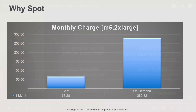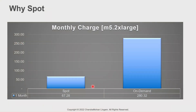Here's a pricing comparison. An M5 2xlarge spot instance would cost $67 for one month's usage, whereas the same instance on on-demand purchasing would cost $280. So with spot, we can add four times more capacity for the same cost as on-demand instances.